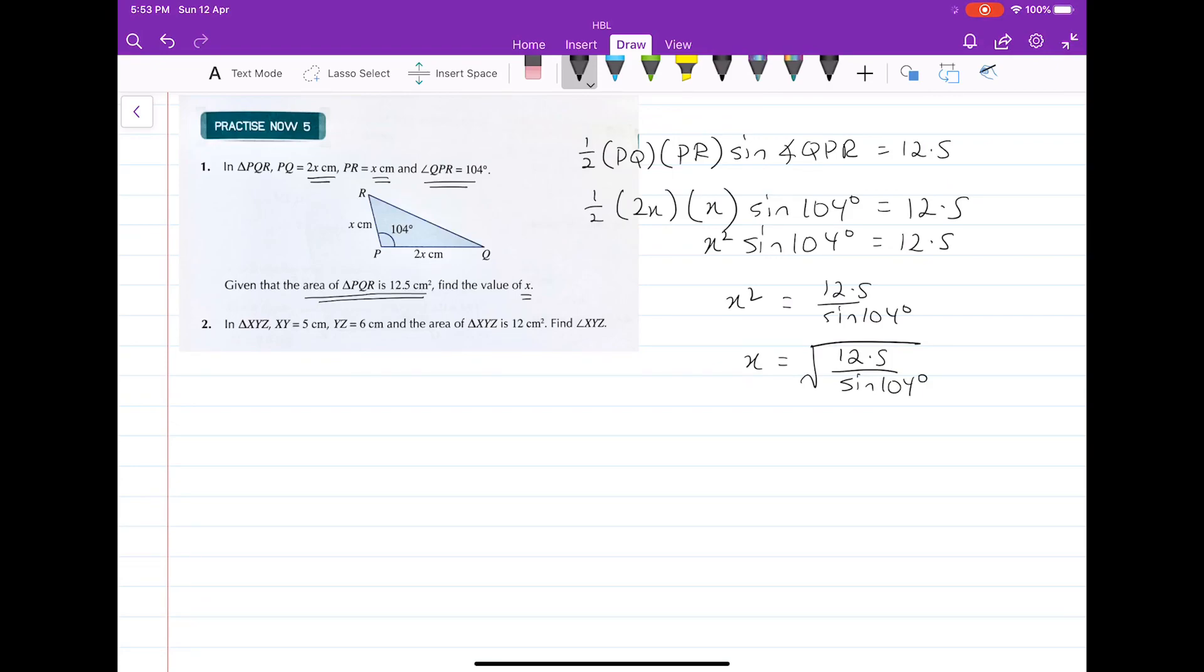We are ignoring the negative value because x cannot be negative. We get a value of 3.5892. Given as 3 significant figures, because the final value is rounded off to 3 significant figures, 3.59, and that is the value of x.